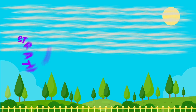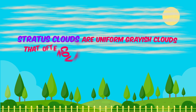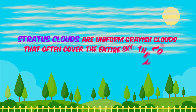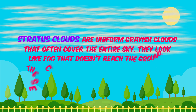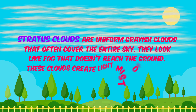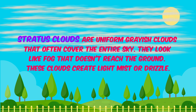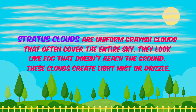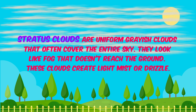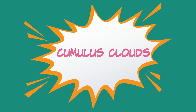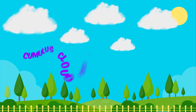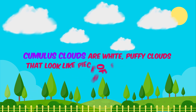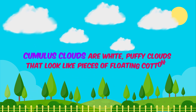Cirrus clouds are usually white, and if you see them you can almost be sure of pleasant weather. Stratus clouds are uniform grayish clouds that often cover the entire sky. They look like fog that doesn't reach the ground. These clouds create light mist or drizzle.